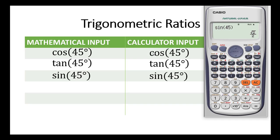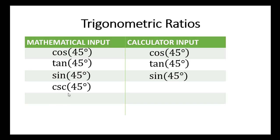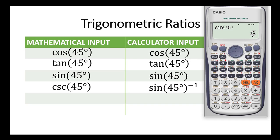Now let's look at the reciprocal trigonometric ratios. Let's start with cosec. Cosec is the inverse of the sine function. So you press sine 45, close bracket, and then raise it to the exponent negative 1. We press sine 45, close bracket, then press the x to the exponent negative 1 key. When you press that, you have negative 1 as your exponent displayed, and then you press equal to. The answer is root 2.